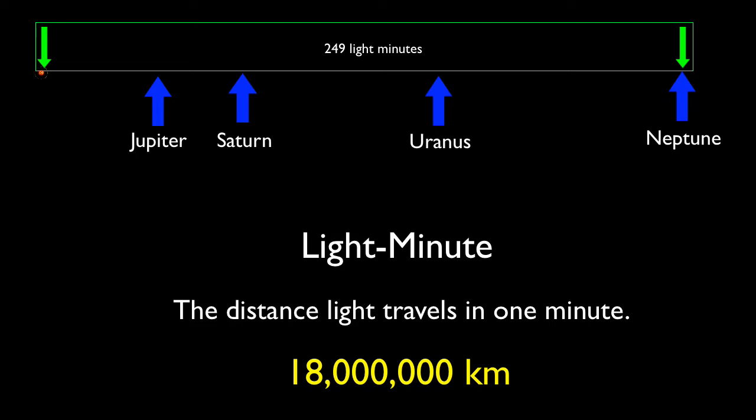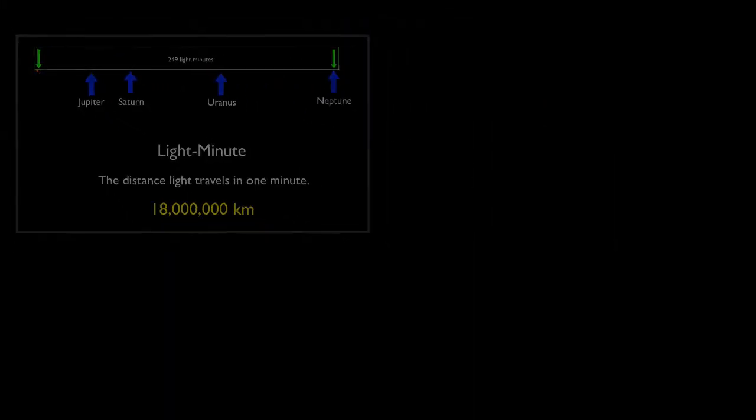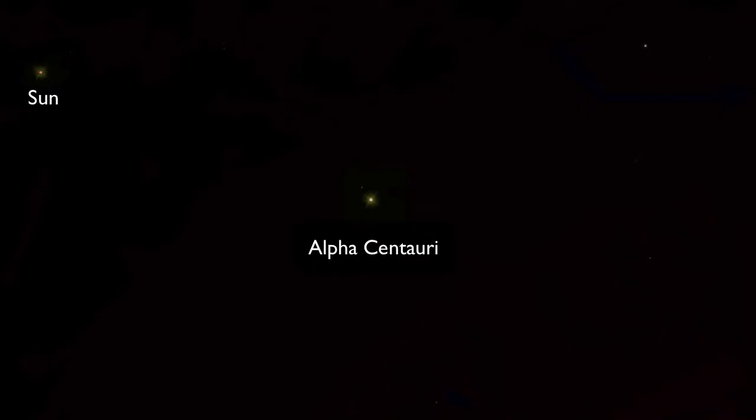Outside our solar system, the distances are far more vast. For example, the next closest star system to us, Alpha Centauri, is about 2.5 million light minutes away. So rather than talking about how far light travels in one minute, it becomes more convenient to talk about how far light travels in one year.